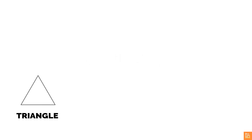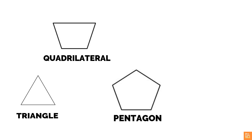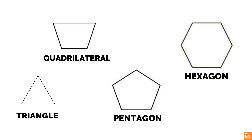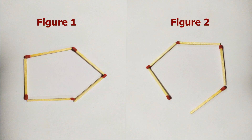Ask them to make different open and closed figures using straws or mastic for line segments and wires for curves. At the initial stage, let children get a feel for the concept of a closed figure with straight edges. Then introduce the figures of triangle, quadrilateral, pentagon, hexagon, etc., without stating their geometrical terms.